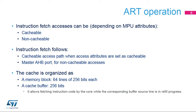The cache memory is organized in 64 lines of 256 bits each. Every line contains eight 32-bit segments, and each segment can contain one 32-bit or two 16-bit instruction codes. The cache buffer is an extra line of 256 bits, keeping a copy of one of the cache lines, or buffer source line.